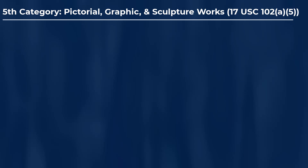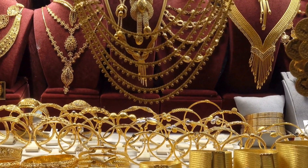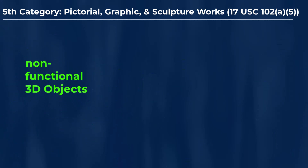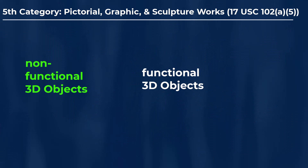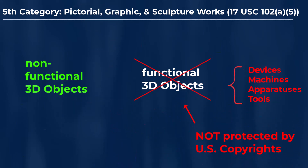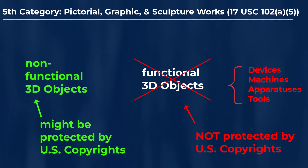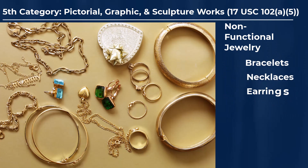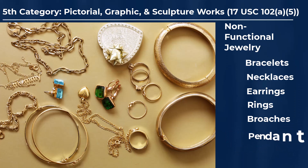Another example of often qualifying sculptures — that is, sculptures that would qualify for U.S. copyright protection — includes non-functional jewelry. Note the reason I'm distinguishing between non-functional 3D objects versus utilitarian functional 3D objects, like a hammer or tools or machines, is that those functional utilitarian 3D objects generally do not qualify for U.S. copyright protection. It's only the non-functional, artistic 3D objects, like sculptures and non-functional jewelry, that are capable of being protected. Non-functional jewelry that often is protected includes things like bracelets, necklaces, earrings, rings, brooches, pendants, anklets, and/or the like.